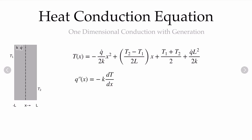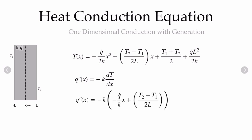Once we have the temperature distribution, we can calculate the heat flux anywhere by applying Fourier's law. The heat flux at any x location is simply the negative of the conductivity times the temperature gradient. Taking that derivative and simplifying gives an expression for the heat flux as a function of x. Since the temperature profile is quadratic, the heat flux varies linearly with x.